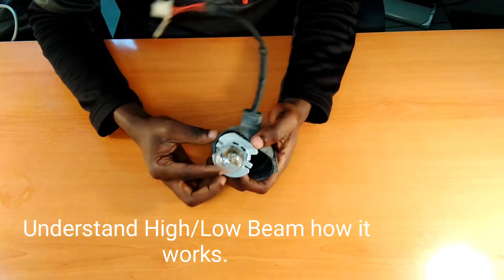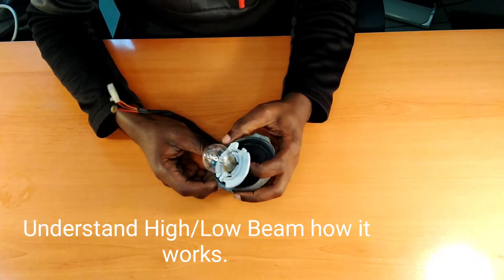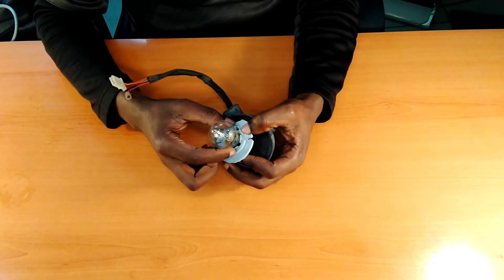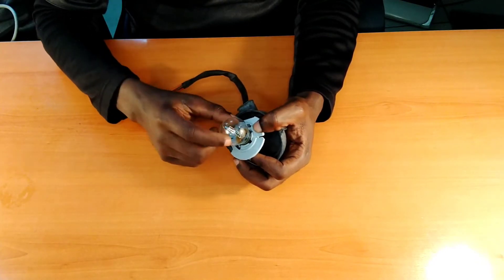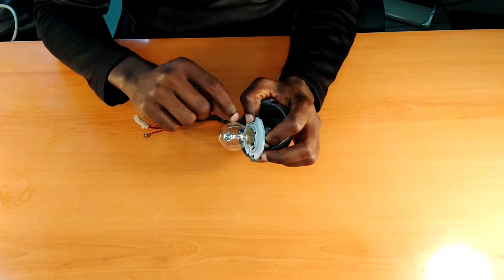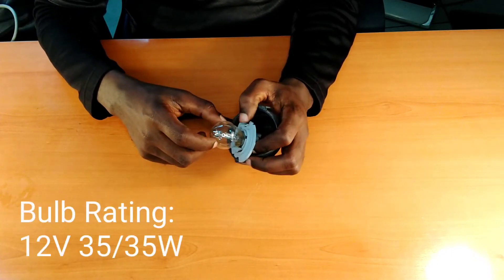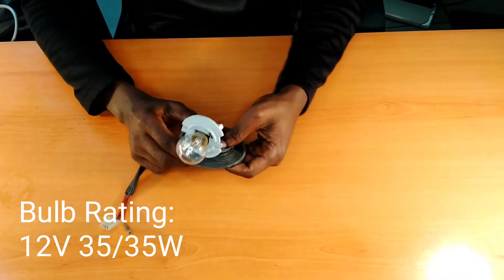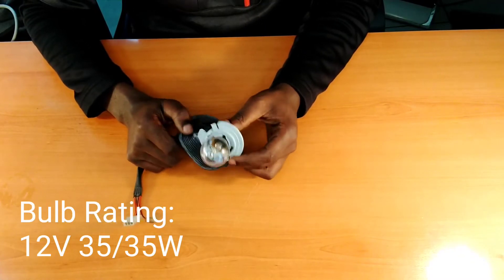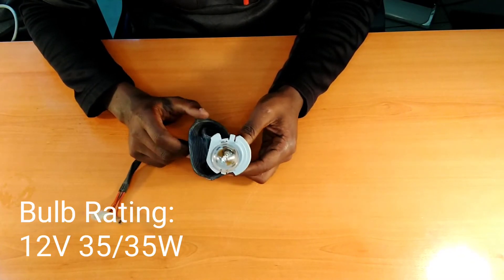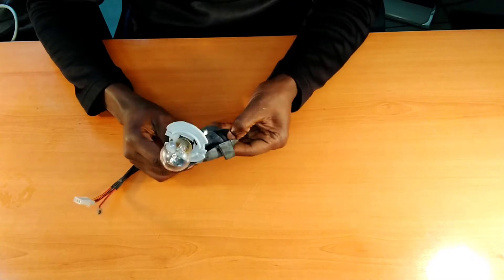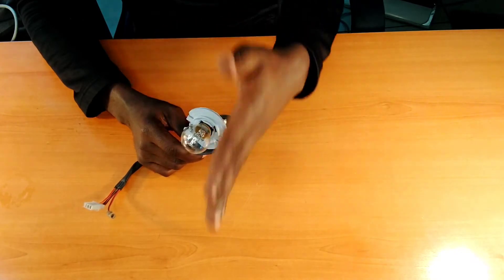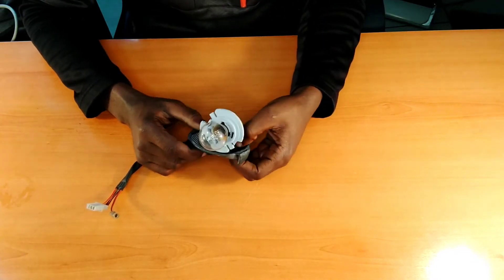My headlight bulb is a 12 volts 35/35 watts, which means the bulb has got two filaments. One filament is 35 watts and the other filament is also 35 watts. Having this bulb alone without having other supportive things to support its illumination might be a little bit tricky.